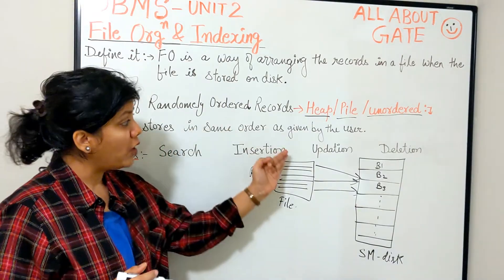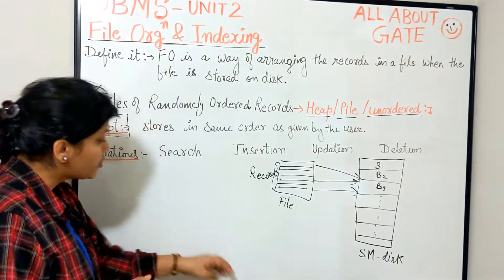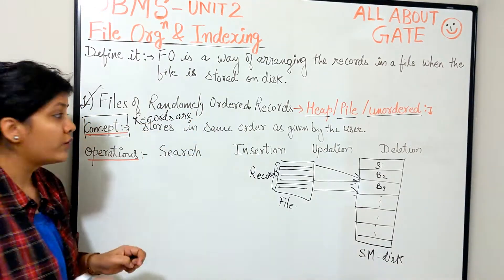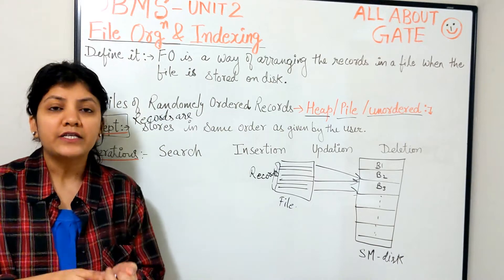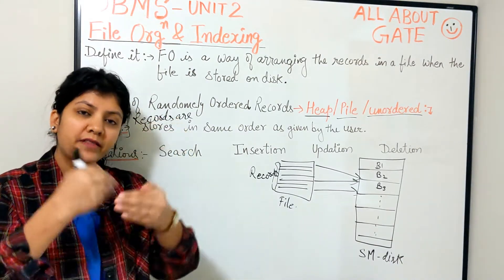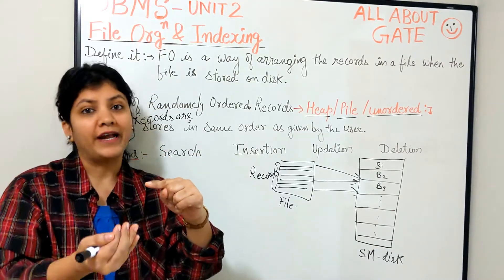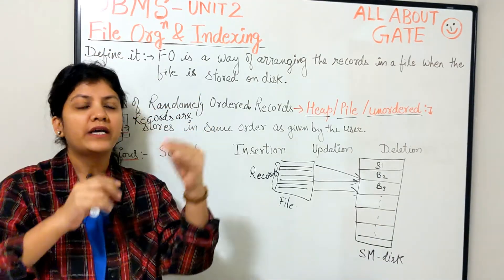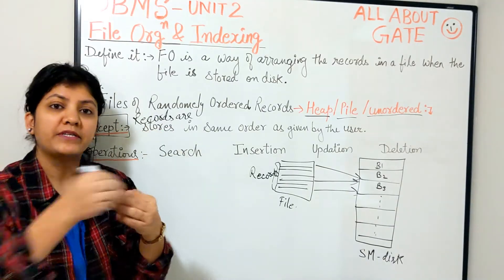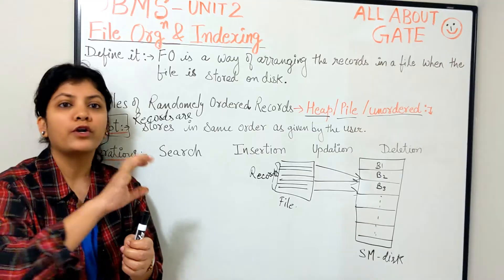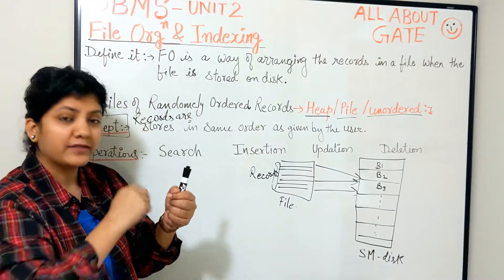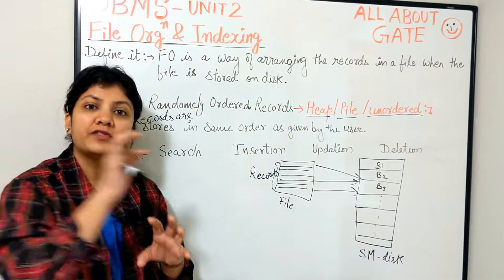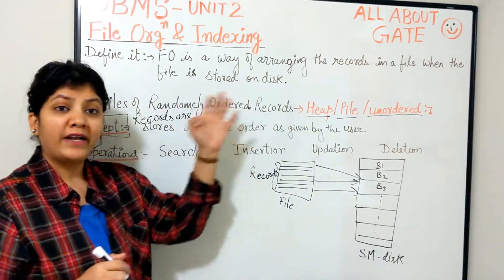Records are stored in the same order as given by the user. Whatever record you are inserting will simply be appended at the end of the file. You will not look for a particular location to place it. Suppose you have already inserted 10 records and now you are inserting the 11th one — it will not look anywhere else, it will simply go to the next empty space after the 10th record. That is what is known as heap file organization or unordered file organization.